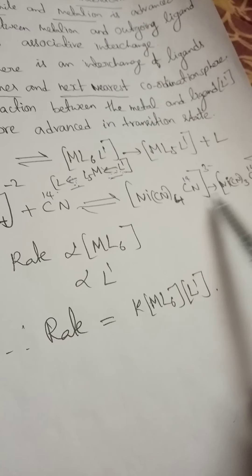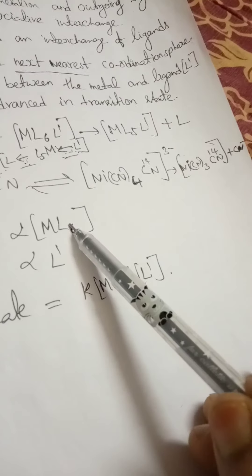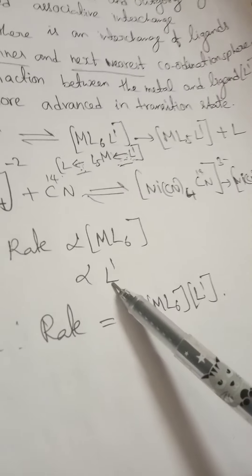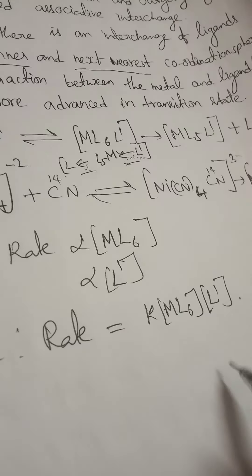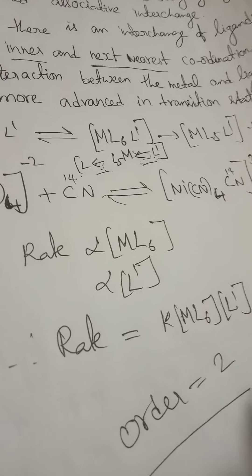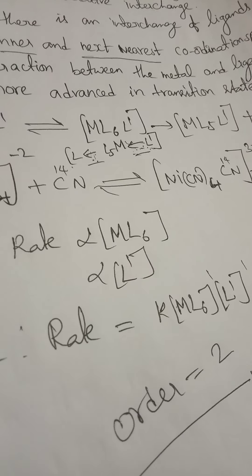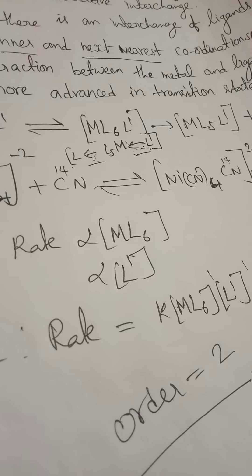The second step is the reduced coordination compound — the intermediate ML5 reacts with the incoming ligand L'. This step is fast. The rate equation is: rate = -d[ML6]/dt = K2[ML5][L']. Here the reactants in the second step are ML5 and L'.